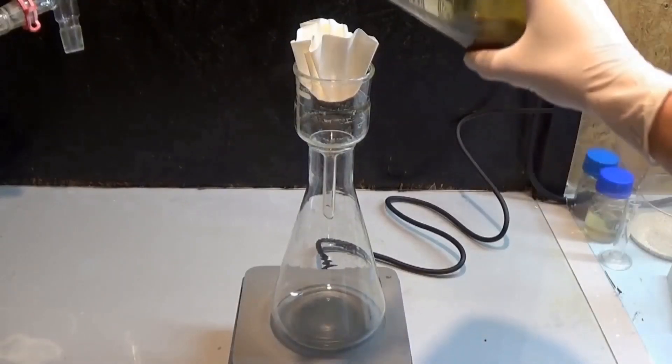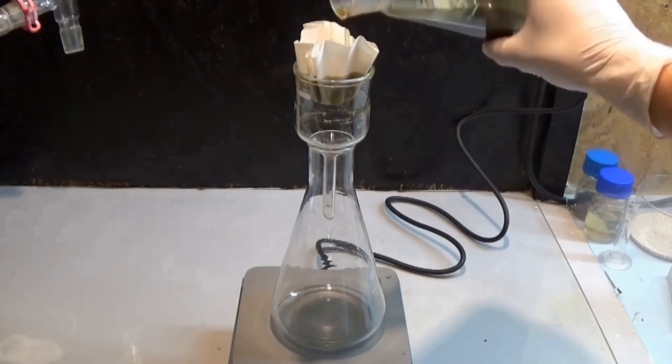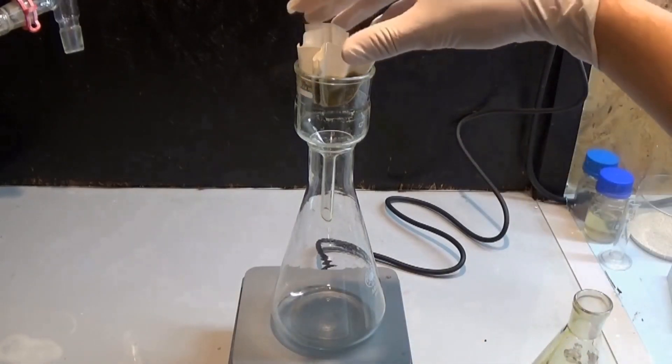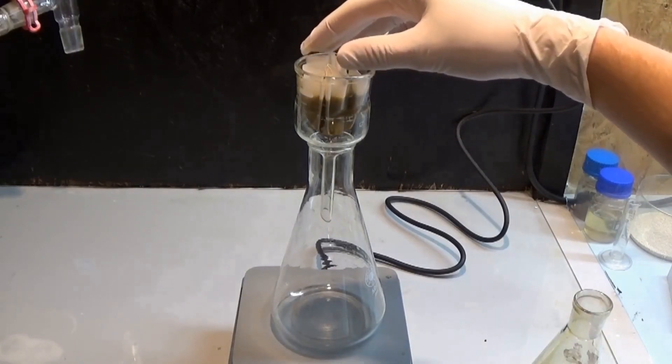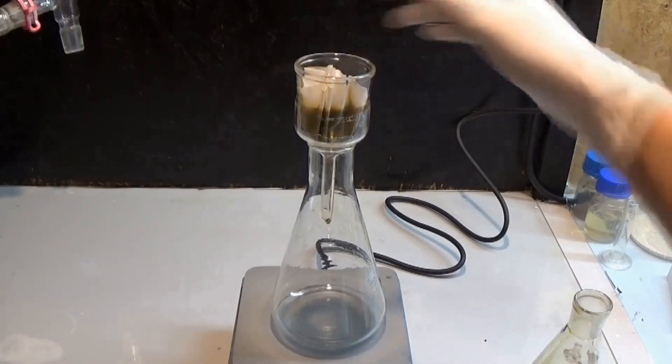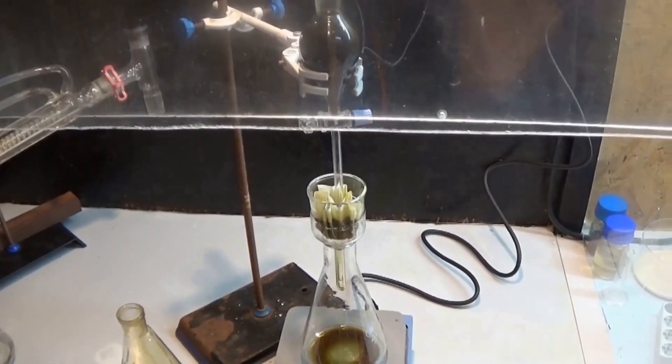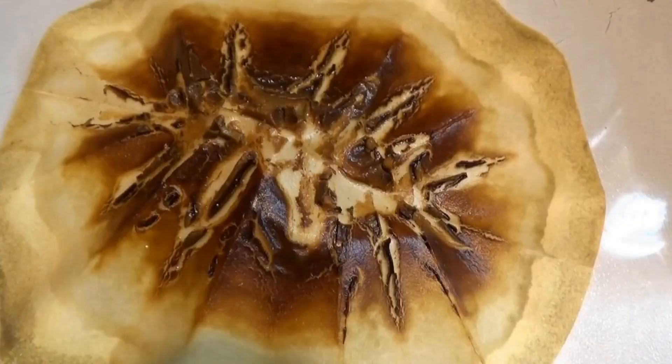If you have access to a vacuum filtration system, I have to warn you: do not use the glass filters for this step. The goopy mixture clogs them pretty bad and it's a pain to clean them out. I had to use hot tetrachloroethylene followed by chromic acid, which are both chemicals I don't really like to work with. But if you have a Buchner funnel, go for it and enjoy the time-saving luxury of a vacuum filtration system.